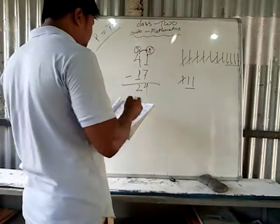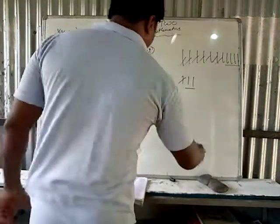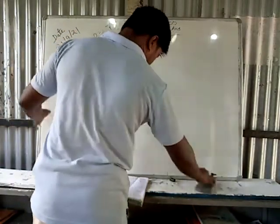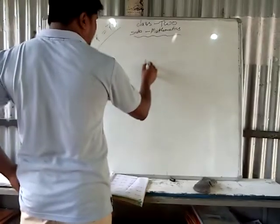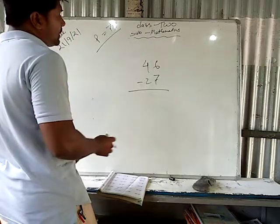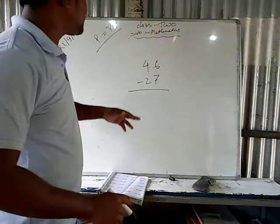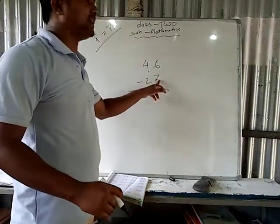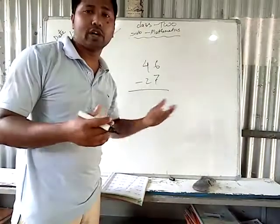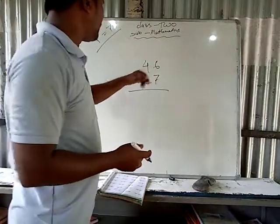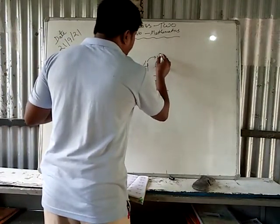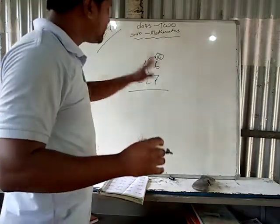One more sum I will do, otherwise you will think I am doing easy ones and giving you hard ones. So one more I will do. 46 minus 27. From 6 to 7 you can't subtract because 6 is smaller than 7 — it is not possible. From a smaller number you cannot subtract a bigger number. So therefore, 6 is there; again from here we take 1, making it 16.